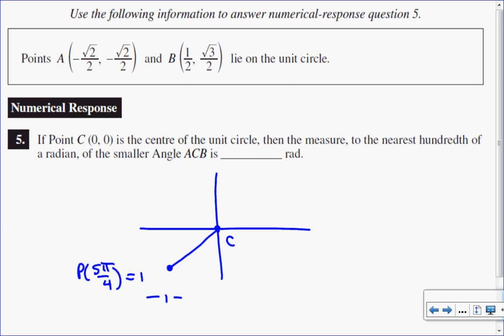So point A is at 5 pi over 4. Now for point B, x and y are both positive, so that's in quadrant 1. I know this because cosine of one half is 60 degrees, or pi over 3. So point B is at pi over 3.